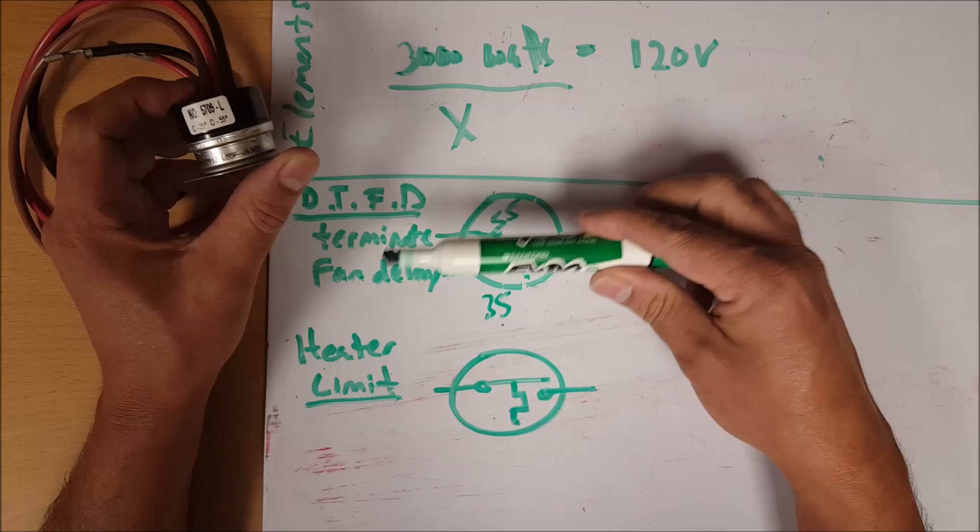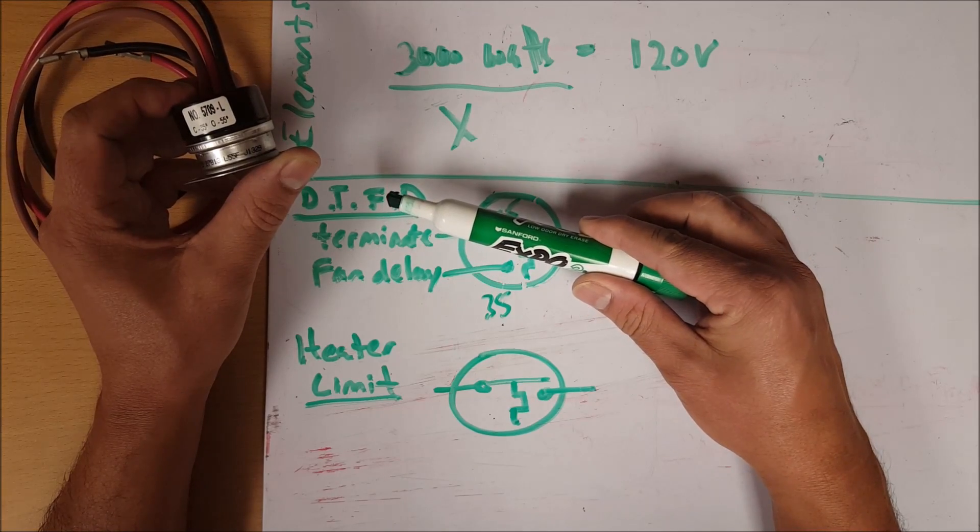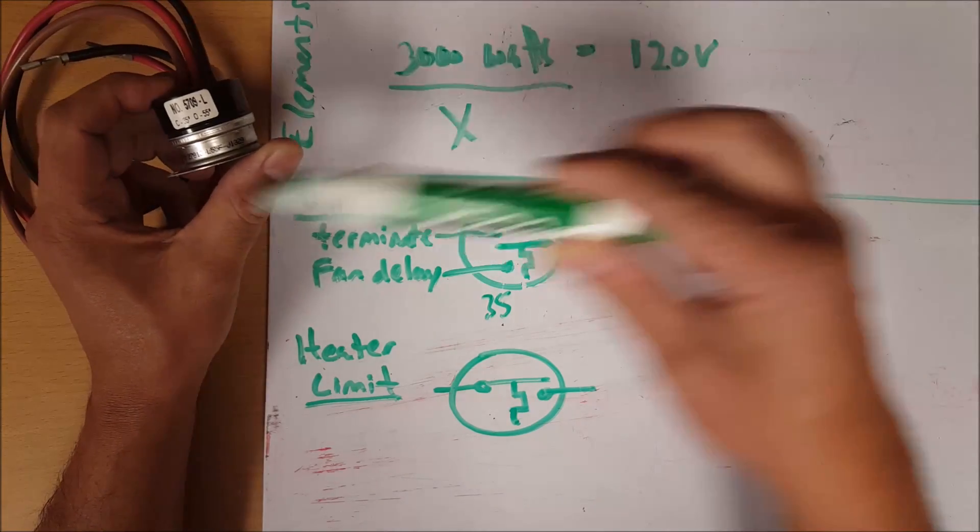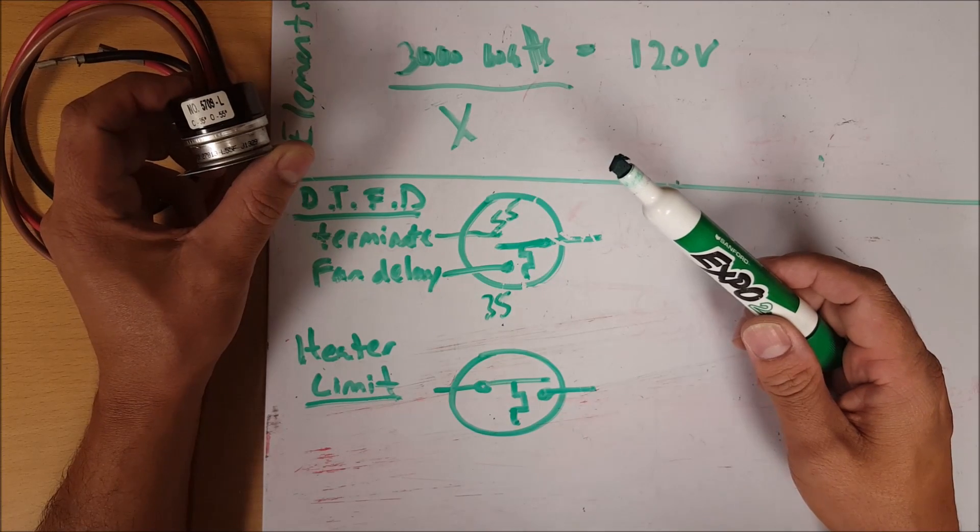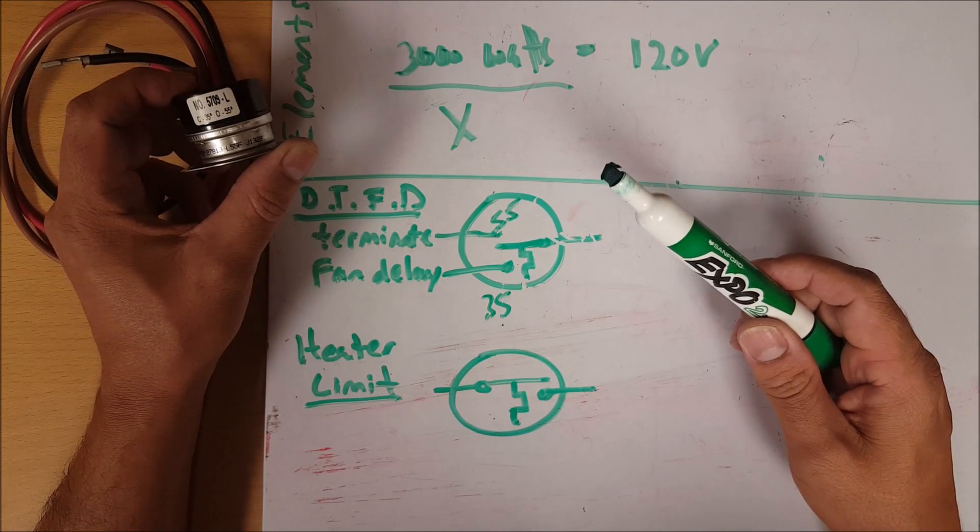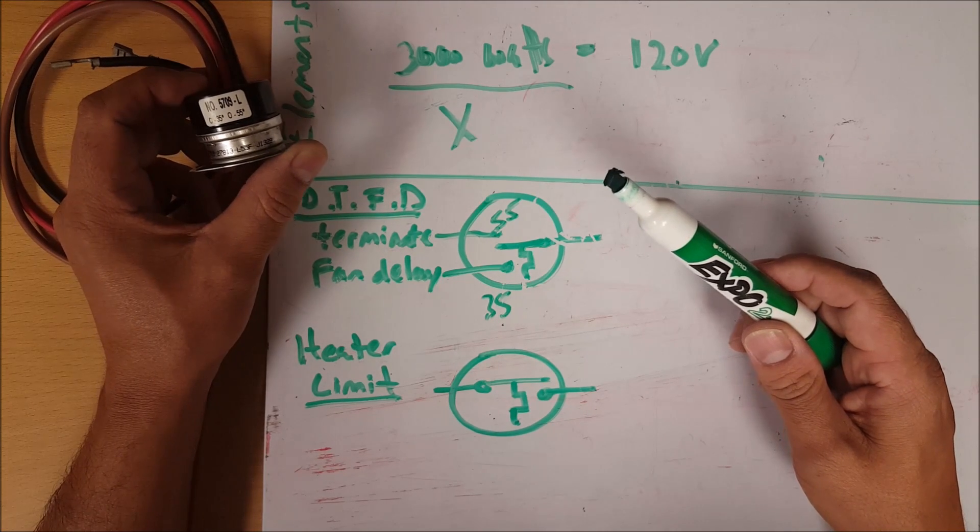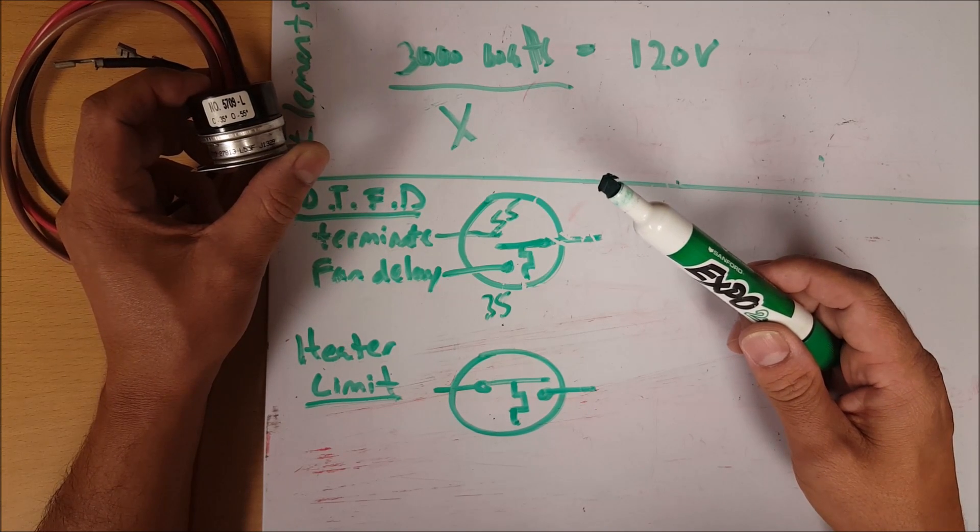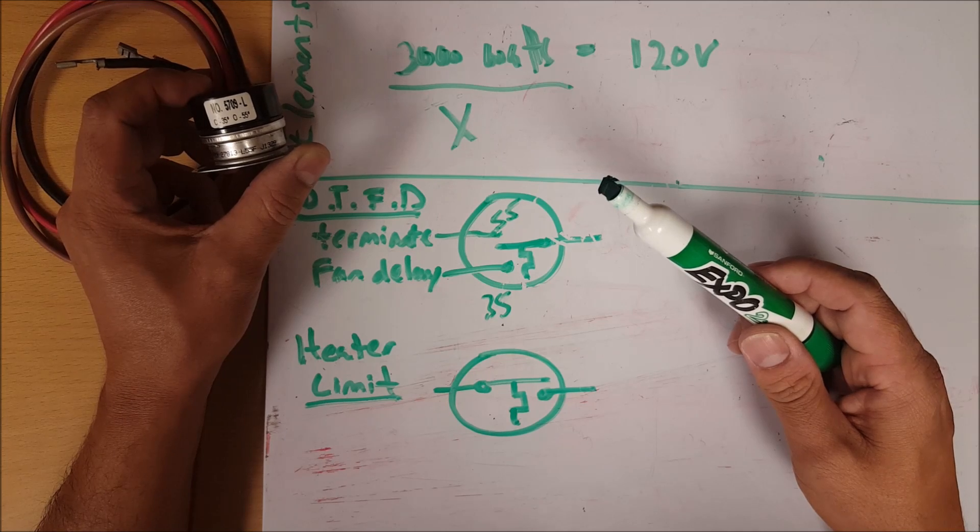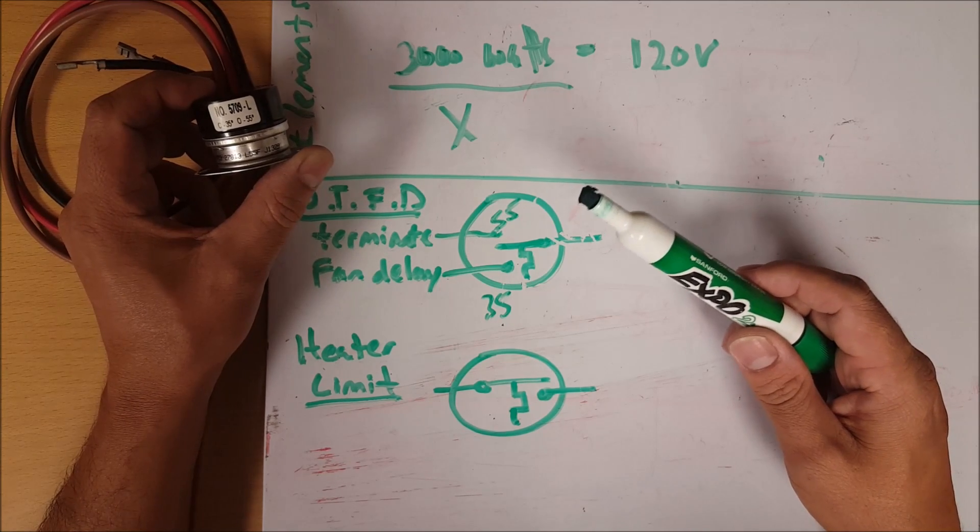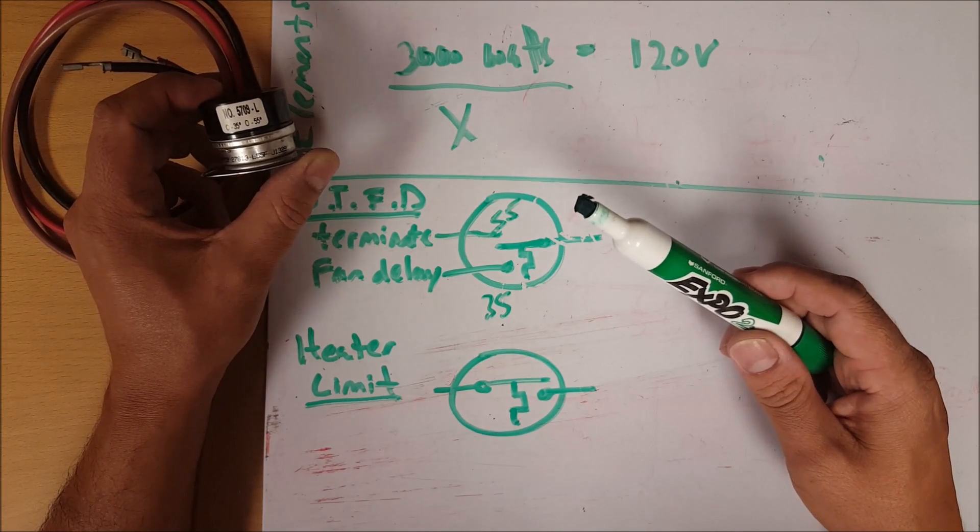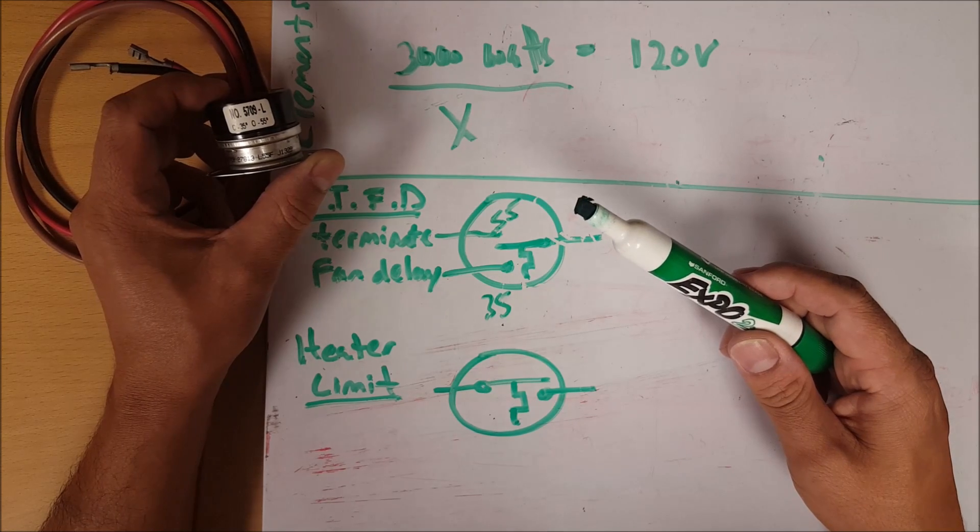During defrost when the temperature hits 55 degrees, it's going to close this switch. That's going to energize your solenoid on the back of your defrost timer and kick it out of defrost, put it back in refrigeration. Doesn't matter if there's any time left on the duration time of your defrost clock. If you're using this switch in conjunction with a termination switch on your timer, that's what's going to happen.